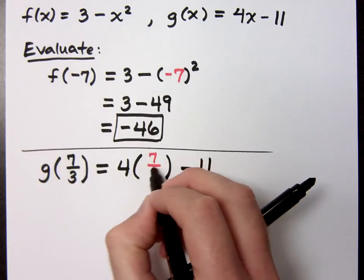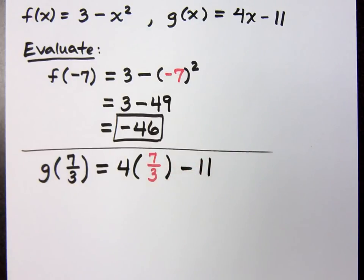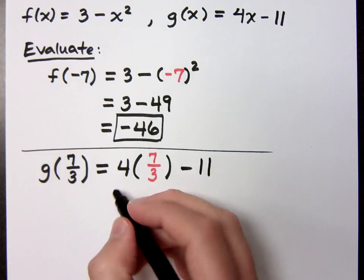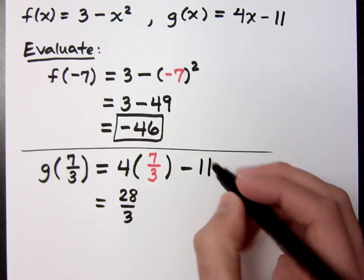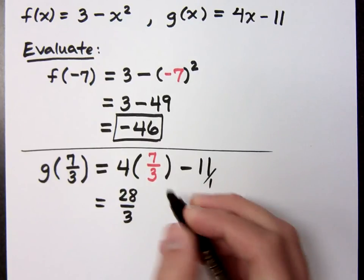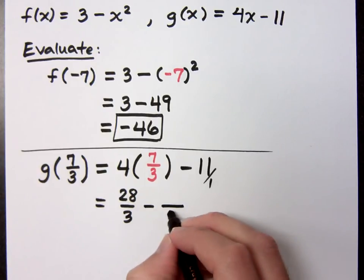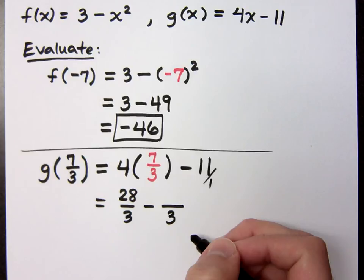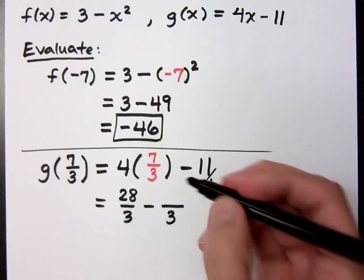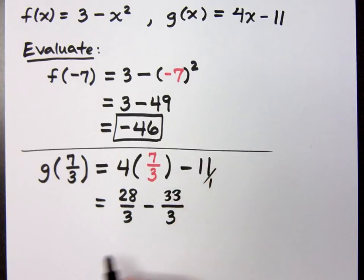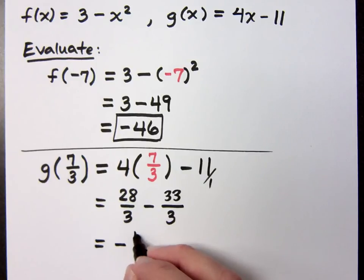So, instead of the X, I'm replacing it with 7 thirds. So, yeah, just working with fractions. This is 28 thirds. Now, wait a minute. This is 11 over 1. I need to make that guy into thirds as well. So, what does he become? It's just fractions, guys. That's 33, right? So, 28 thirds minus 33 thirds is what? Come on, guys. Oh, I like this. Negative 5 thirds.